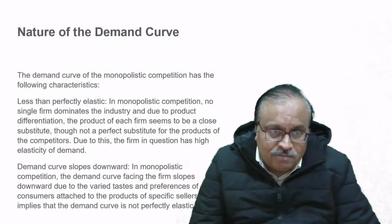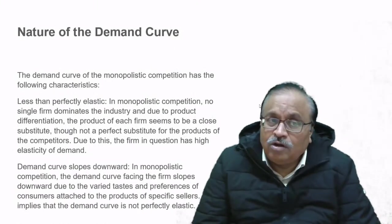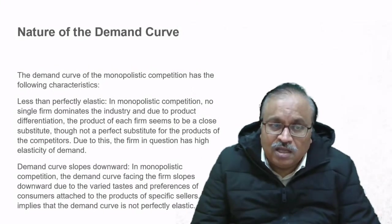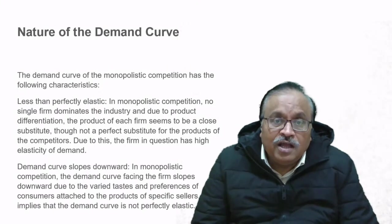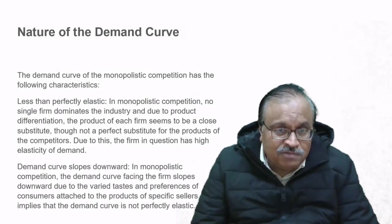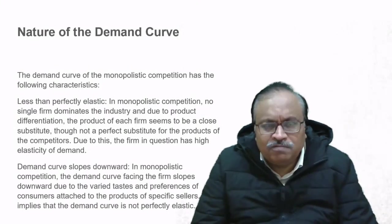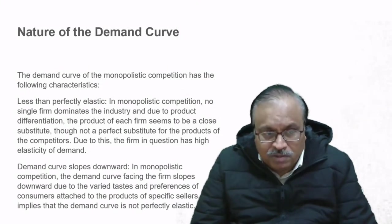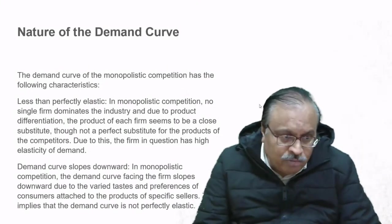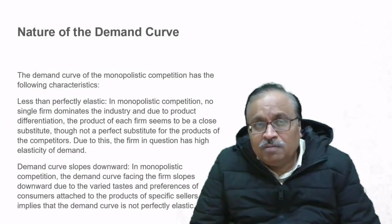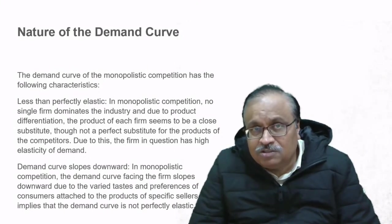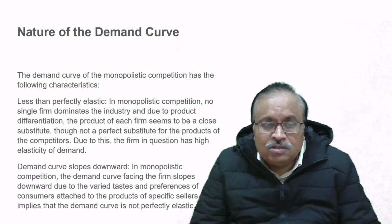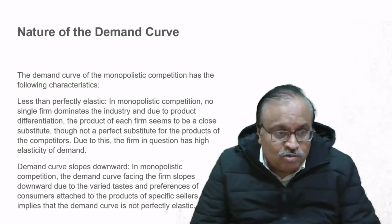Regarding the nature of the demand curve in monopolistic competition: it is less than perfectly elastic. No single firm dominates the industry, and due to product differentiation each firm's product appears to be a close substitute, though not a perfect one. Because of this, each firm has a high elasticity of demand. The demand curve slopes downward in monopolistic competition, unlike in perfect competition where it is horizontal.